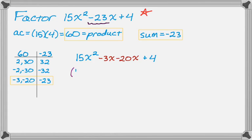So now we just do our thing. We group the first two things, put a plus, group the second two things. We look at the first set. So we're going to look at 15 and negative 3, take out a positive 3. And then x squared and x, take out an x.